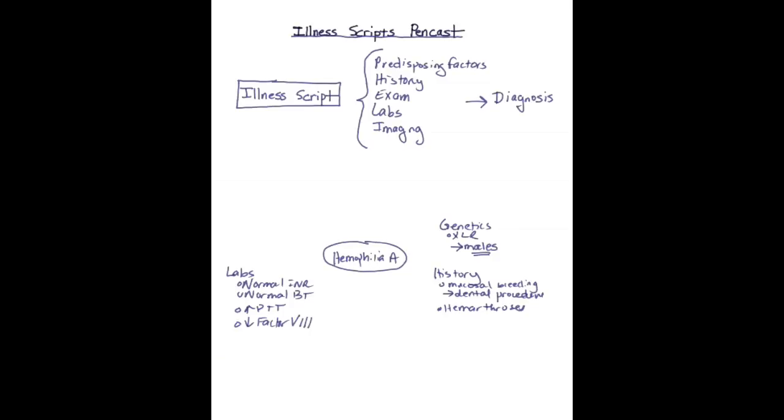Other diagnoses to consider in this differential, however, would be hemophilia B, which is a factor IX deficiency, and von Willebrand's disease, which we will get to later.